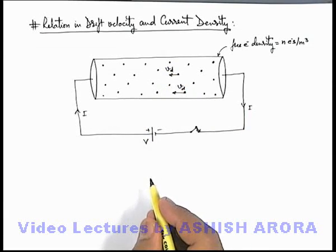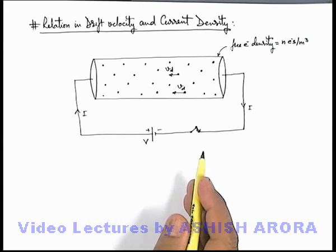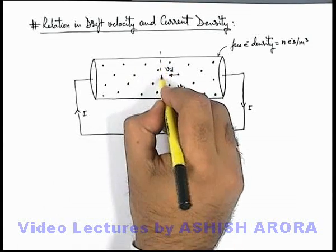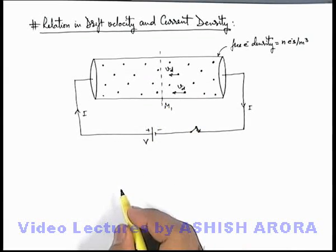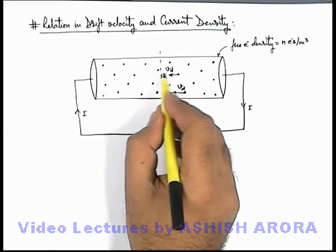Now in this situation, we can easily calculate the value of current as rate of charge. So if we consider a cross section, say this is a cross section M1, through which if an electron is passing, we know well that in a unit time electrons will travel a distance.